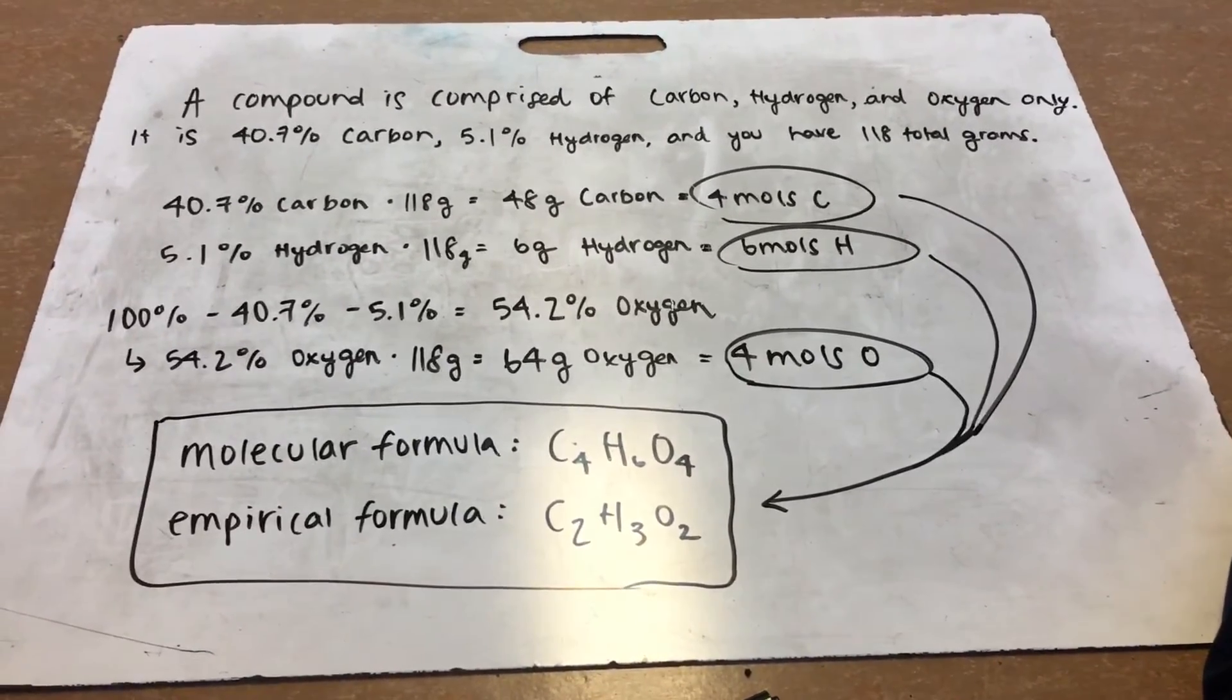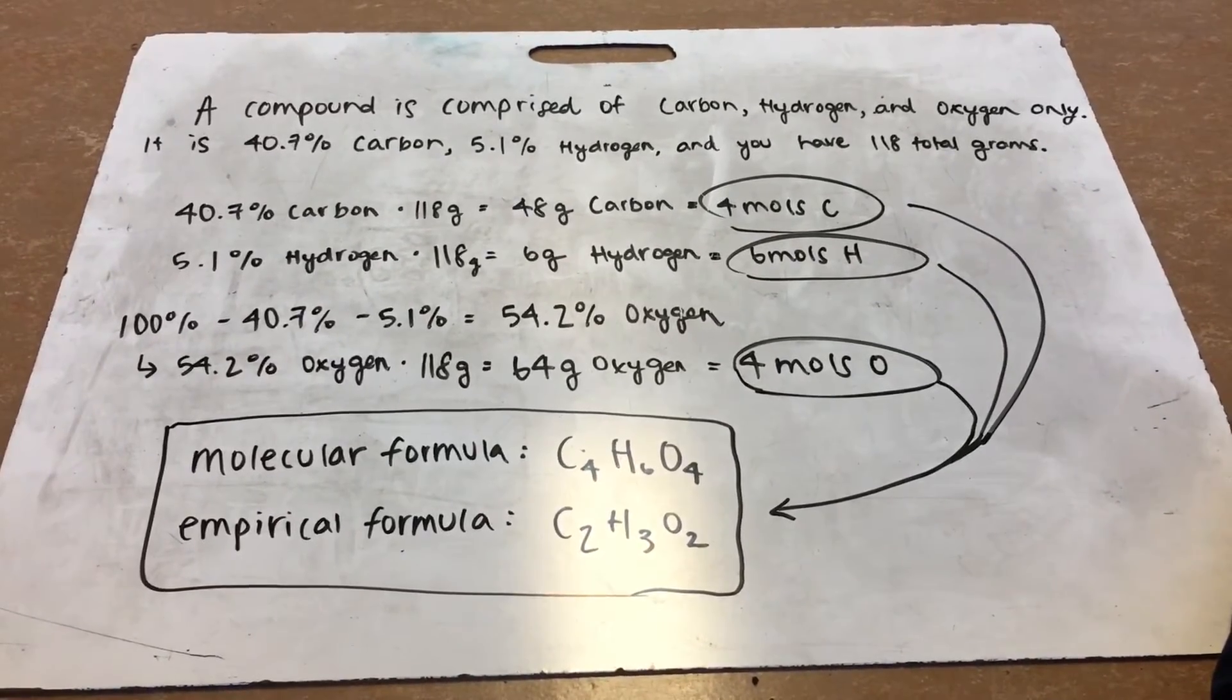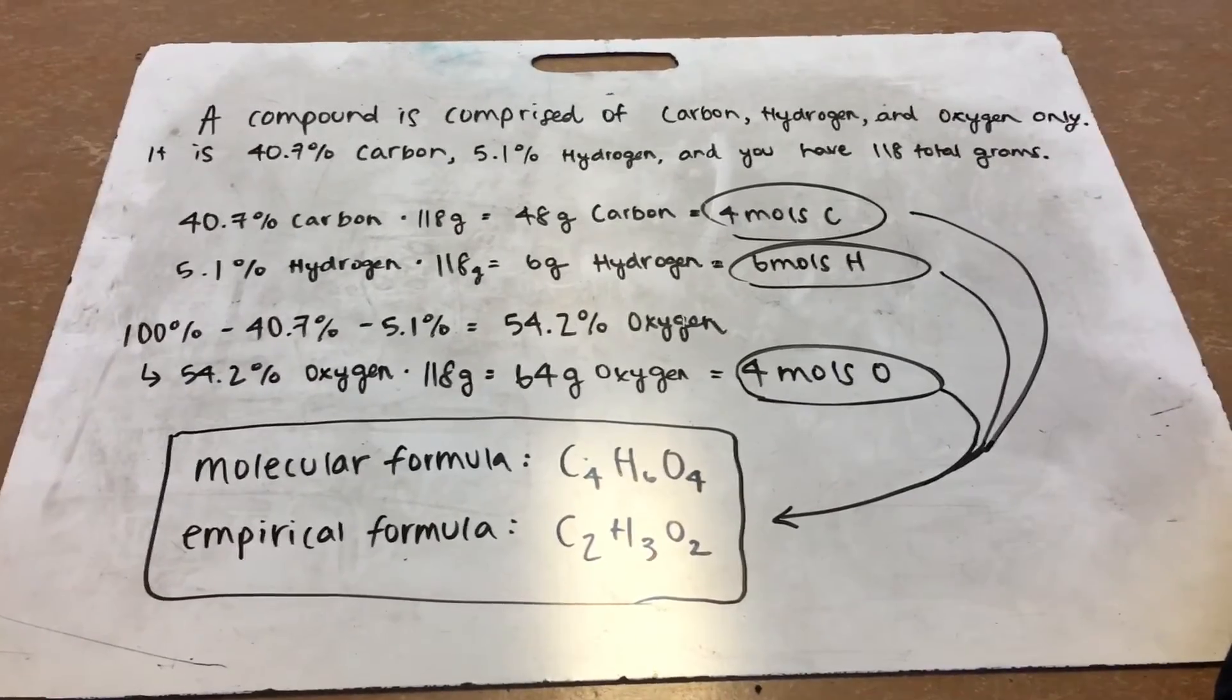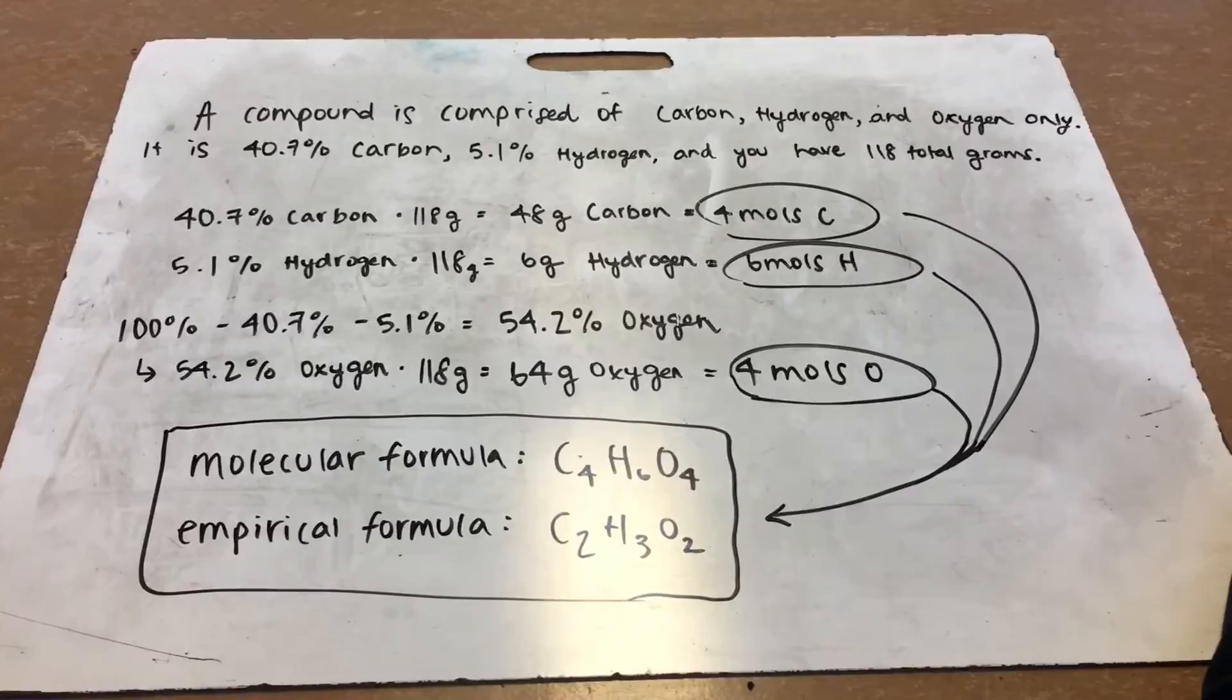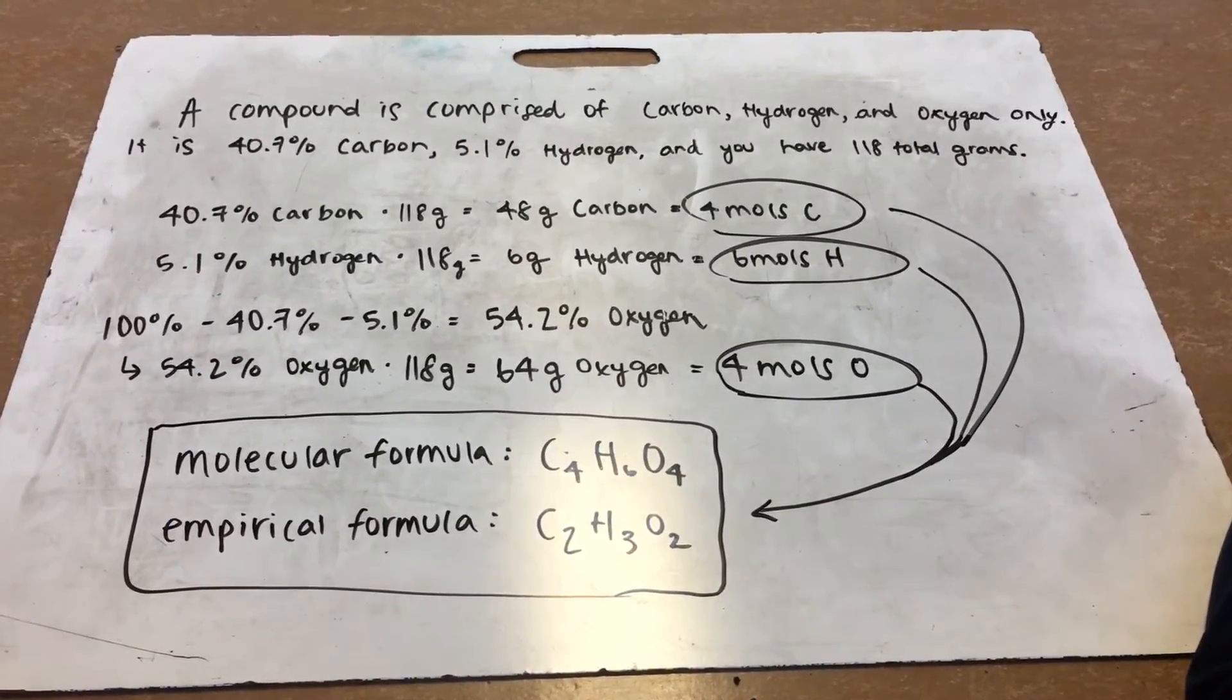And then to figure out the percent of oxygen, you have to subtract from 100 the carbon and hydrogen to get 54.2% oxygen. And then you multiply that by the total mass, you get 64 grams of oxygen, divide by 16 grams per mole to get 4 moles of oxygen.